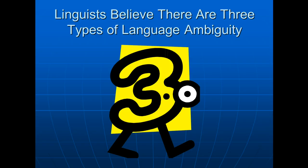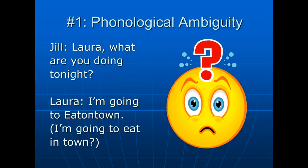Linguists believe there are three types of language ambiguity. The first is phonological ambiguity — phonology being the study of the sound of language. I recall an incident where a friend named Jill asked what I was going to do that night, and I said 'I'm going to Eatontown,' which was the name of a nearby town. She thought I said 'I'm going to eat in town.' We went in circles until we realized what was happening, because 'Eatontown' and 'eat in town' sound exactly the same in casual conversation. That's phonological ambiguity — two words or phrases sound identical and people are confused by the meaning.